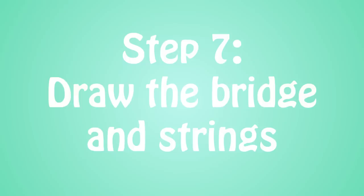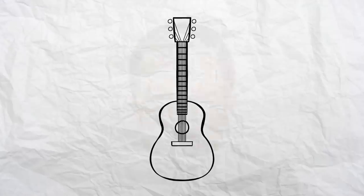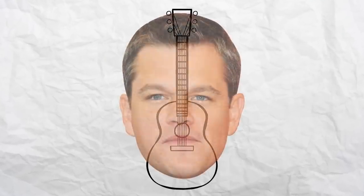Step 7: Draw the bridge and the strings. Around halfway down the body, draw a small rectangle like so. Next, simply draw six parallel evenly spaced lines from this rectangle up to the head, then join them to the tuning pegs. Hmm. Tell me, did those strings star in the 1997 classic Good Will Hunting? Because they look an awful lot like Matt Damon. Jesus Christ!